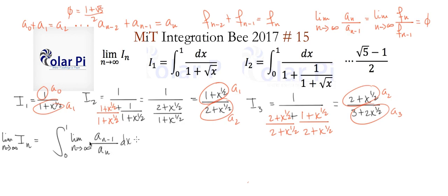This limit is going to be what? Well, if the limit as n goes to infinity of a sub n over a sub n minus 1 is phi, then the limit of this reciprocal should be 1 over phi. So this limit should be 1 over phi, 1 over the golden ratio. So this is what we've got. That there is 1 over phi.